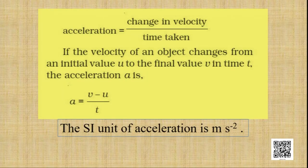Acceleration is defined as the rate of change of velocity. Acceleration can be calculated as the change in velocity divided by time taken. If the velocity of an object changes from an initial value u to a final value v in a time t, then the acceleration a can be calculated as a = (v − u) / t.